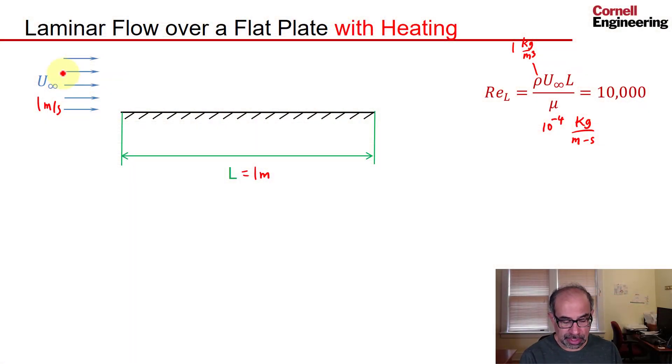As before, we have a free stream coming in and we'll take that velocity still to be one meter per second. But now we also have to consider the temperature in the free stream. We will take that to be 400 Kelvin. The temperature at the wall is different from the temperature of the free stream, and we will take that to be 300 Kelvin.